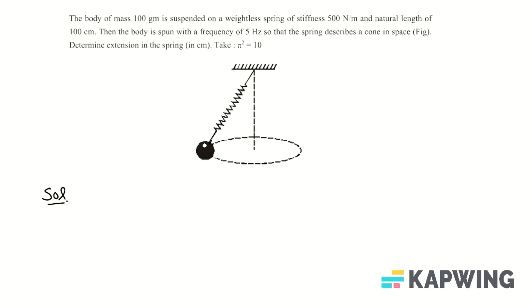In this question, suppose the extension in the spring is x, so its force will be kx. Let's suppose this angle is theta. The force toward the center will be kx sin theta, and that will equal m omega squared r.